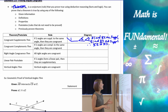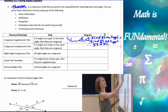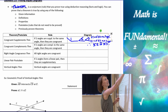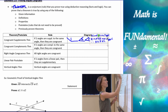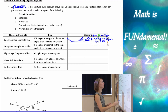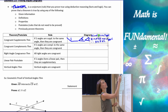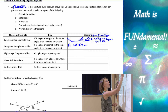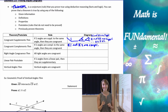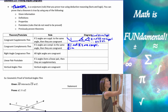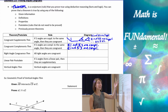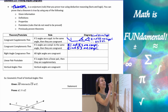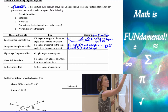Similarly, we have the Congruent Complements Theorem, which is the same thing but for complementary angles. If two angles are complementary to the same angle, then they are also congruent. Angle one and angle two are complementary — they add to 90 degrees instead of 180. And angle one and angle three are complementary. So if angles two and three are both complementary to angle one, therefore angle two is congruent to angle three.